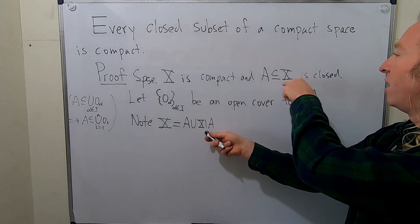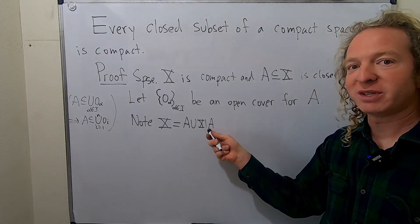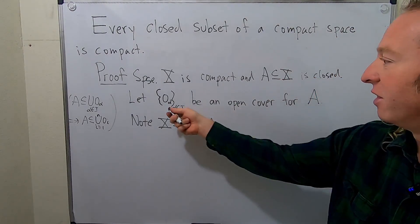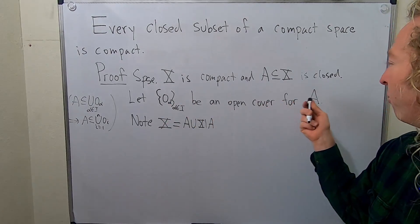Notice this is open, right? Because A is closed. So we already have an open set here. And here's the key. This is an open cover for A.